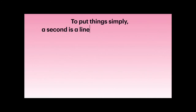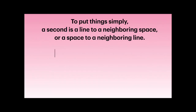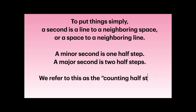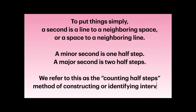To put things simply: a second is a line to a neighboring space or a space to a neighboring line. A minor second is one half-step; a major second is two half-steps. We refer to this as the counting half-steps method of constructing or identifying intervals.